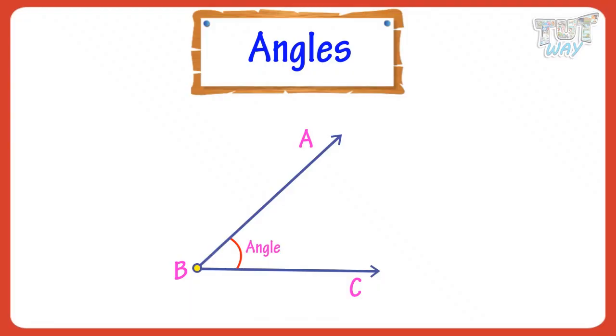Here, B is the vertex of the angle. A-B and B-C are the legs of the angle.